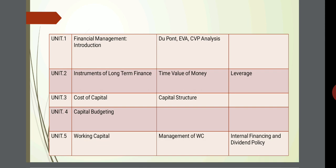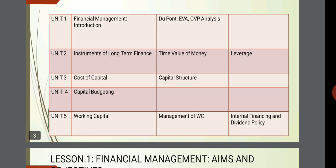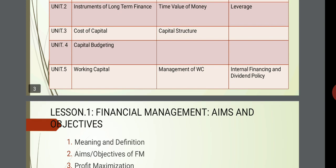Unit 1 consists of financial management introduction, DuPont analysis, EVA — economic value addition — and CVP analysis. Unit 2 has instruments of long-term finance, time value of money, and leverage. Unit 3: cost of capital and capital structure. Unit 4: capital budgeting. Unit 5: working capital, management of working capital, internal financing and dividend policy.